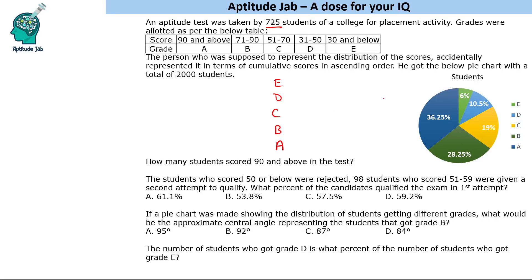There are 5 grades. E will be correct because for E he will represent the correct number. Let us first write the cumulative score based on this pie chart: 6% is 120, this will be 210, and 19% is 380. 28.25, so 2 times of this is 565, and this is 725.